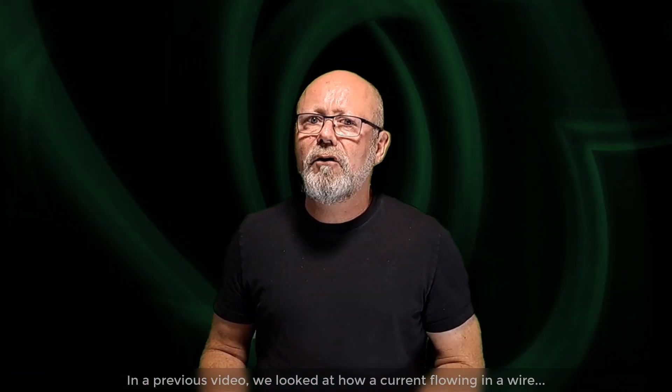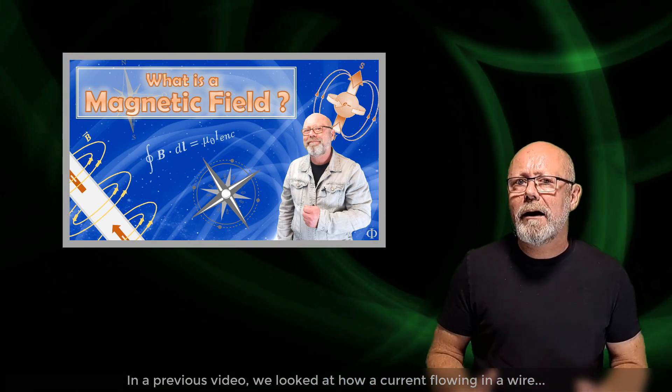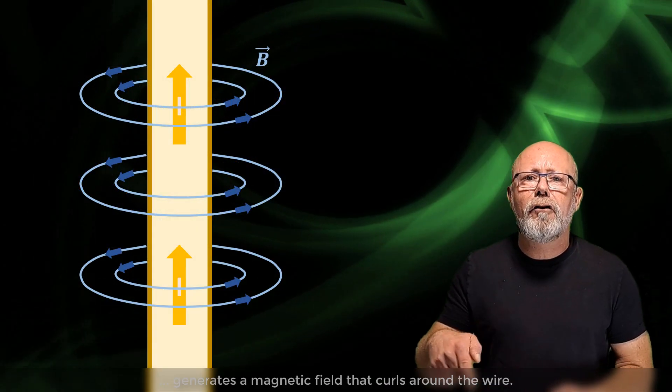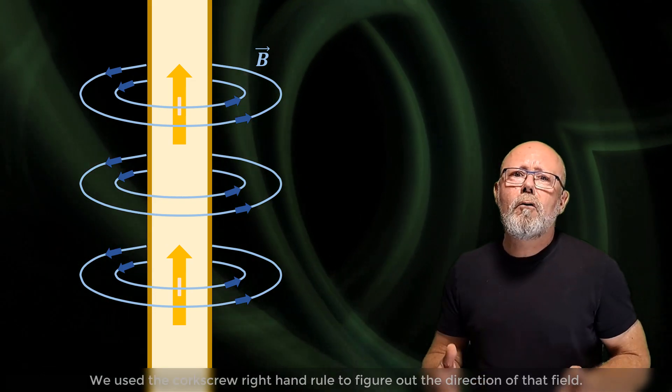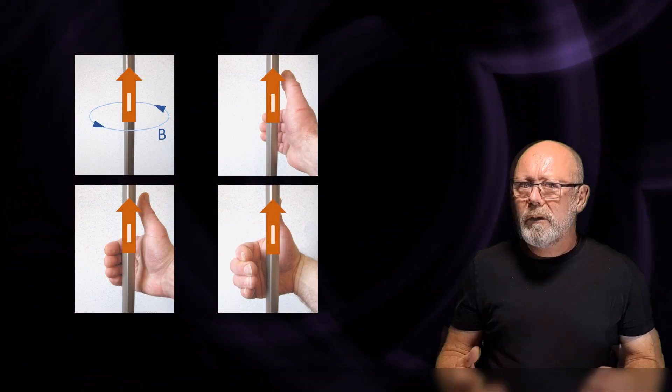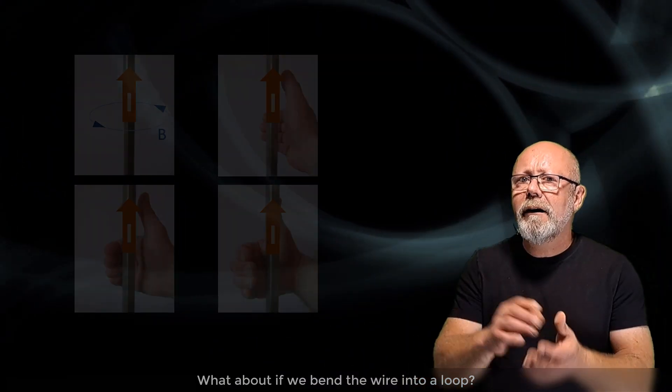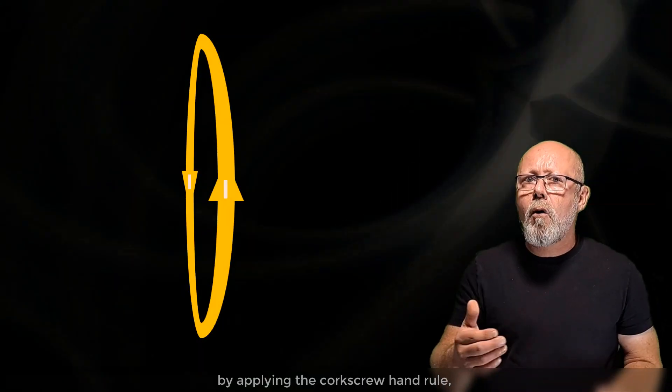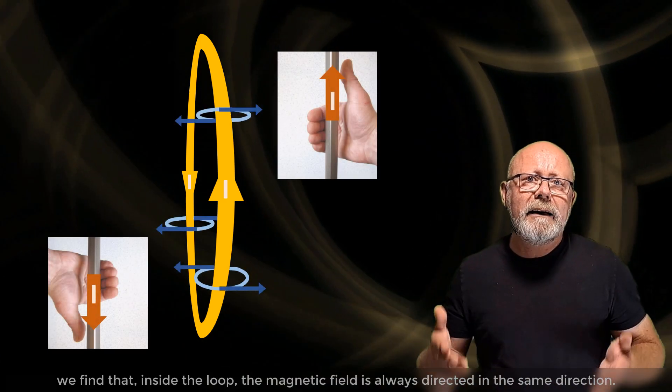In a previous video, we looked at how a current flowing in a wire generates a magnetic field that curls around the wire. We use the corkscrew right hand rule to figure out the direction of that field. What about if we bend the wire into a loop? By applying the corkscrew hand rule, we find that, inside the loop, the magnetic field is always directed in the same direction.